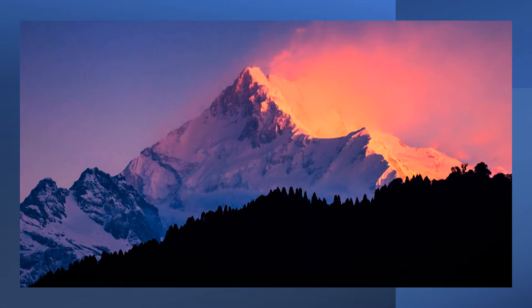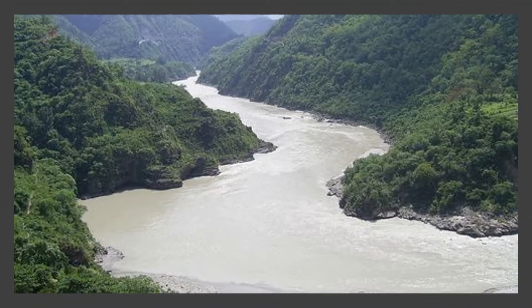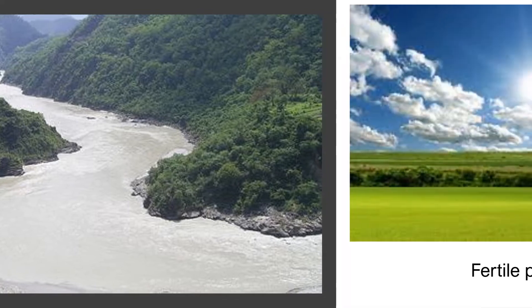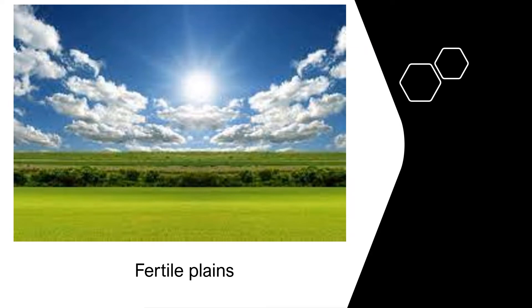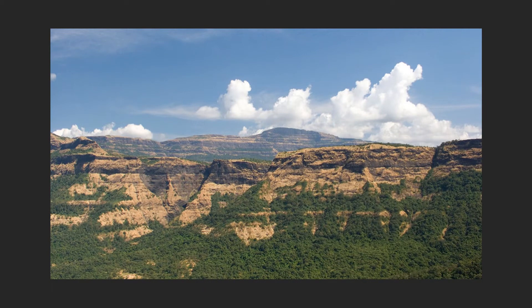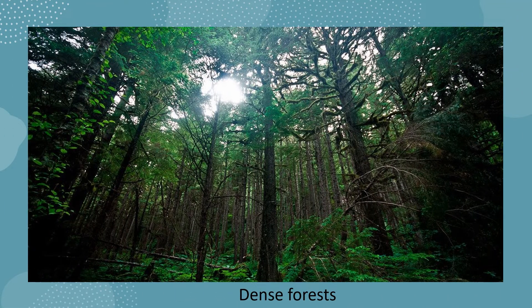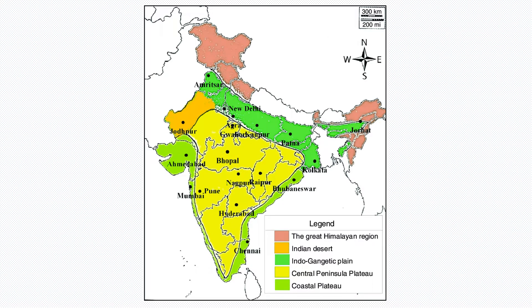India is a land of high mountains, mighty rivers, fertile plains, extensive plateaus, and dense forests. Broadly, the mainland can be divided into four major physical units: the northern mountains in the north, the northern plains at the foothills of the mountains, the peninsular plateau in the south, and the coastal plains.